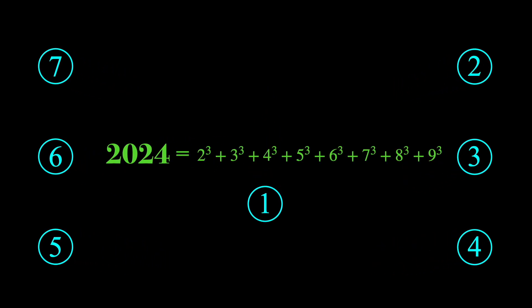First, it can be written as the sum of integers 2 through 9 where each integer is cubed.